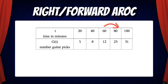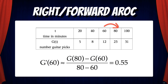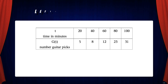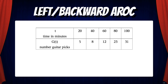Let's start with the right or forward AROC. Note that we're estimating the IROC by using an average rate of change. We can say that g prime of 60 is approximately equal to g of 80 minus g of 60 over 80 minus 60, and that is equal to 0.55.